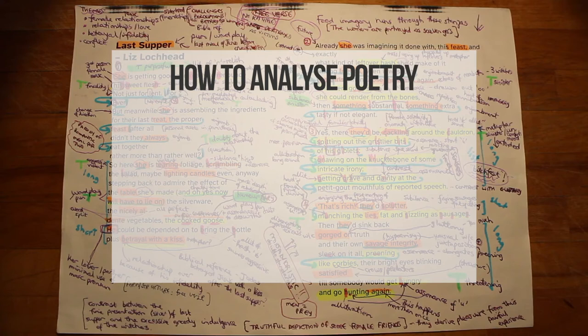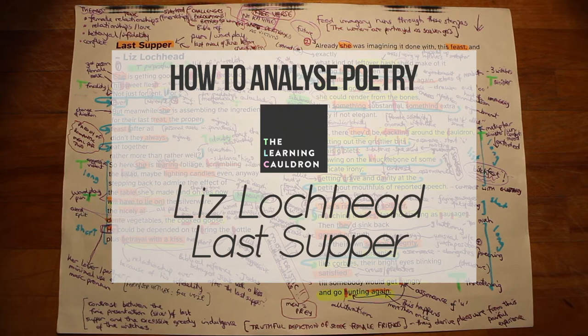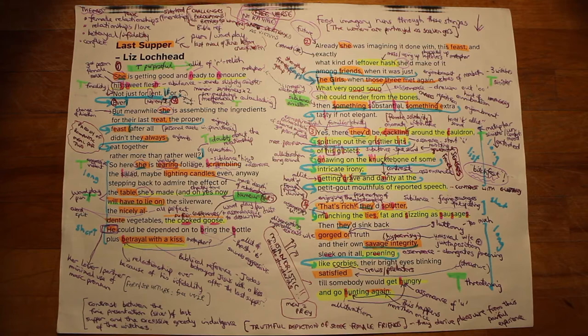Here's an episode of how to analyze poetry from The Learning Cauldron. Today we'll be looking at Liz Lochhead's poem Last Supper. Analyzing poetry involves identifying and dissecting the literary techniques that the poet has used effectively to explore the themes of a poem.